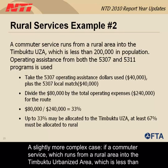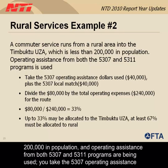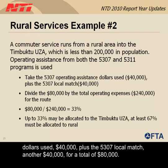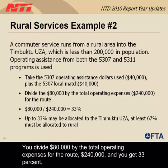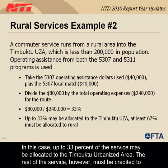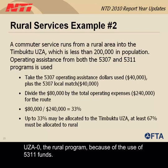Take the 5307 operating assistance dollars used — $40,000 — plus the 5307 local match — another $40,000 — for a total of $80,000. Divide $80,000 by the total operating expenses for the route, $240,000, and you get 33%. So up to 33% of this service may be allocated to the Timbuktu urbanized area. The rest must be credited to UZA-0, the rural program, because of the use of 5311 funds.